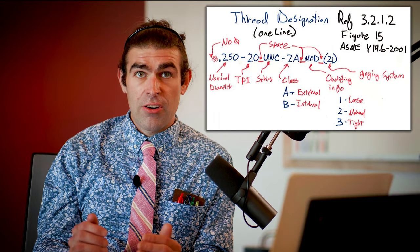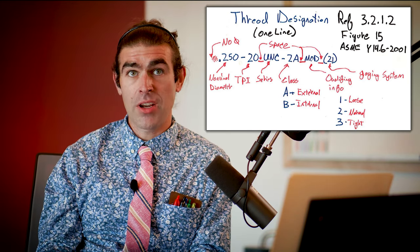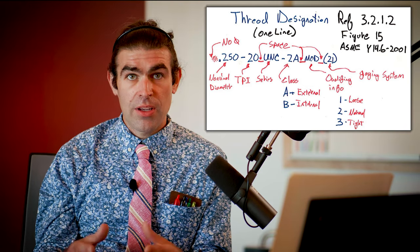Multiple starts will be indicated in the thread specification if required — you can't show it in a simplified, schematic, or detailed representation. The last thing on the thread specification is the gauging standard, shown in parentheses as either 21, 22, or 23. Most of the time it's going to be a 21, which is the most basic form of gauging — essentially a go/no-go gauge check. 22 is more stringent; 23 is even more stringent, meaning you're essentially measuring every single dimension on a thread. A 23 gauging specification is used in critical applications like single-point-of-failure situations where life could be at risk.